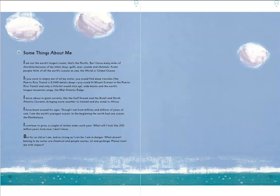I have been around for ages, though I am formed from millions and millions of years of rain. I am the earth's youngest ocean. In the beginning, the earth had one ocean. I continue to grow a couple of inches wider each year. What will I look like 200 million years from now? I don't know. But for as old as I am and as strong as I can be, I am in danger.